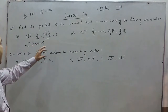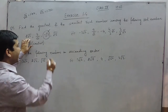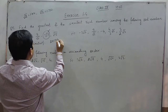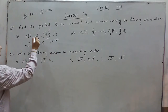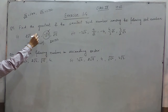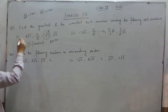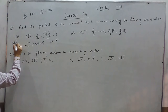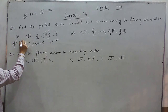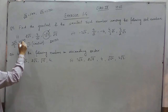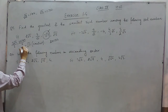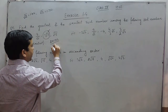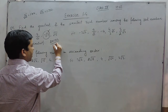When we talk about the largest real number: 2√3 can be written as 2 into 1.73. 3 upon under root 2 — we have to multiply and divide by root 2 to rationalize the denominator — so this is 3√2 upon 2, which is 3 into 1.414 upon 2. If we solve it, it is approximately 2.1. And 2√3 is approximately 3.4.